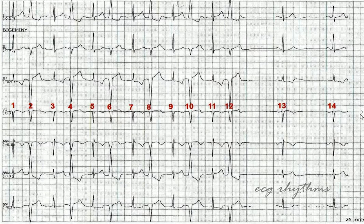QRS complexes 1, 3, 5, 7, 9, and 11 are all conducted with prolonged PR intervals — about 0.28 seconds. The PR intervals of complexes 13 and 14 are shorter, about 0.16 seconds, compared to the ones mentioned before.